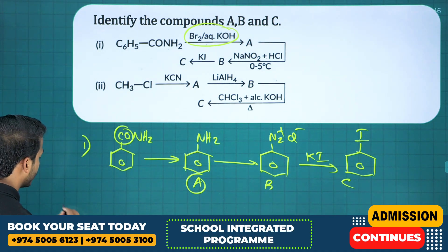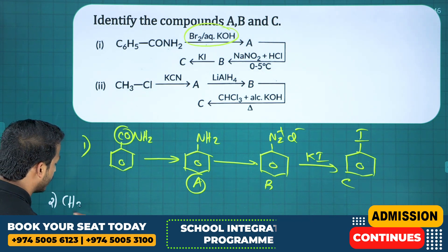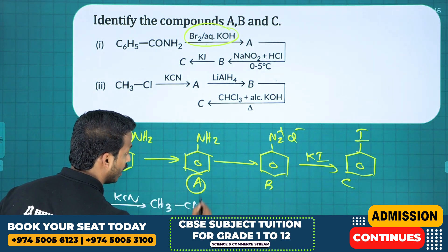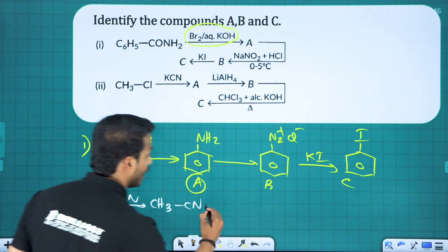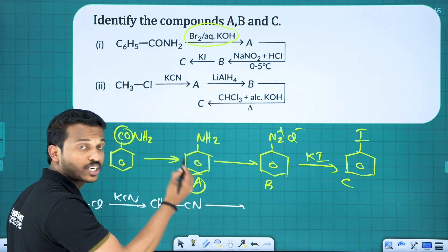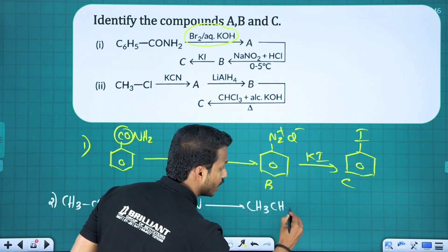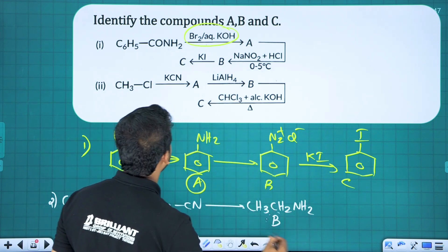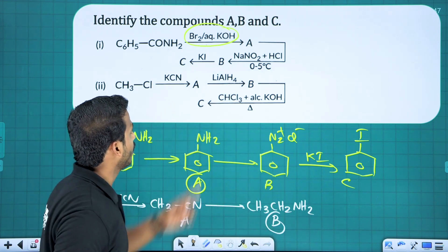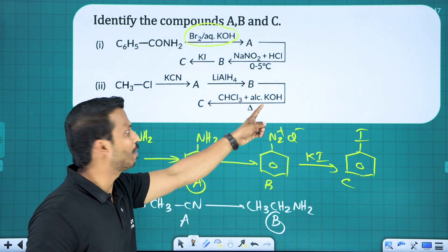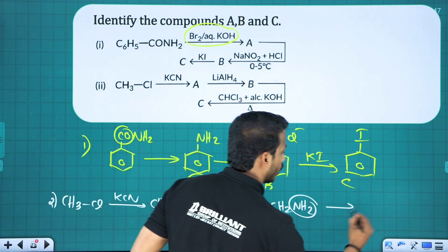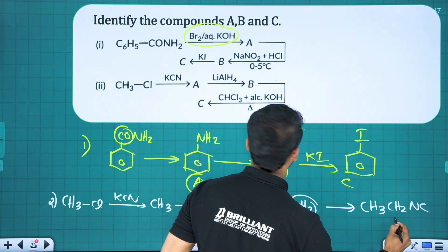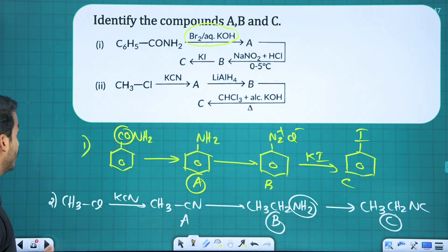Starting with CH3Cl treated with KCN, we get CH3CN — methyl cyanide (compound A). Methyl cyanide on reduction gives CH3CH2NH2 — ethanamine (compound B). Compound B on carbylamine reaction: NH2 becomes NC, so CH3CH2NC — that is ethyl isocyanide, compound C.